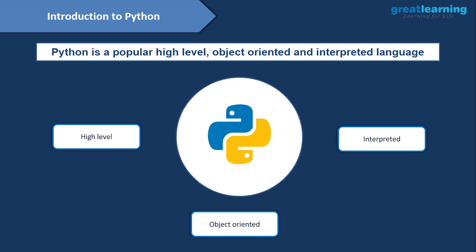Python is a very popular high-level, object-oriented, and interpreted language. When we say high-level, it means that even if you have no idea about coding, Python reads just like normal English. The same way you write English, you can write code in Python. This is why Python is very flexible and beginner-friendly. Using Python, you can access so many libraries, and these are the main reasons why Python has become so popular.